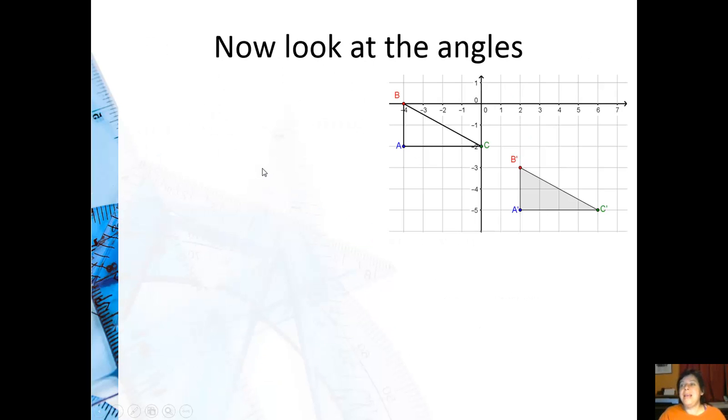Now let's take a look at the angles, can we tell if they're congruent or not? Well, angle A is congruent to angle A' for sure, because this segment, AB, is perpendicular to AC. And A'B' is perpendicular to A'C'. Well, that means those are right angles, and all right angles are congruent.